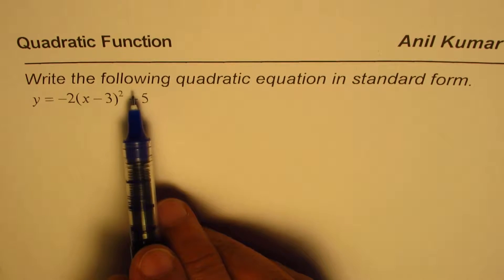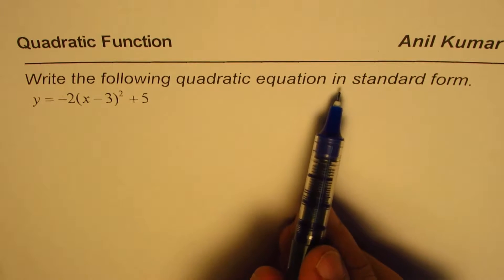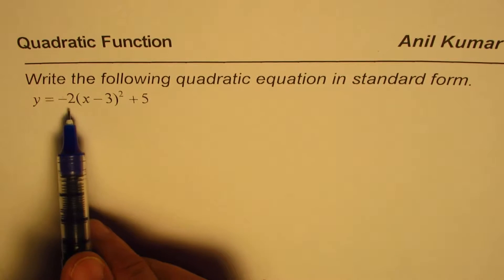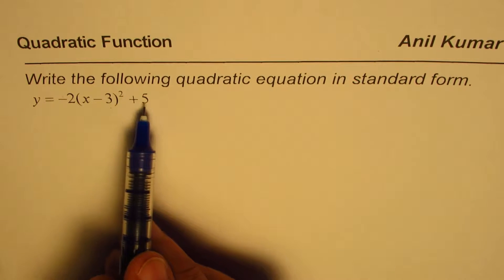The question here is: write the following quadratic equation in standard form. Y equals minus 2 times x minus 3 whole square plus 5.